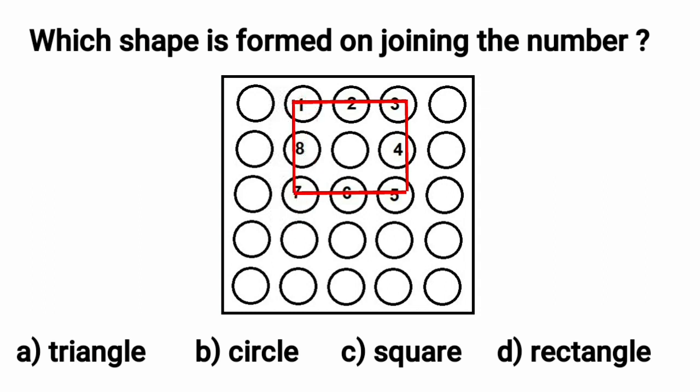On joining the numbers, we get a 4-sided figure and we can see all four sides are equal. So it is a square. A square has four equal sides. So C, square is the correct option. We will choose it and put a tick mark at option C, that is square.